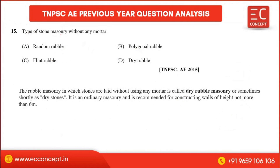Next question: what type of stone masonry is constructed without any mortar? The answer is dry rubble masonry. Dry rubble masonry is the type in which stones are laid without using any mortar, sometimes referred to simply as dry stone masonry.